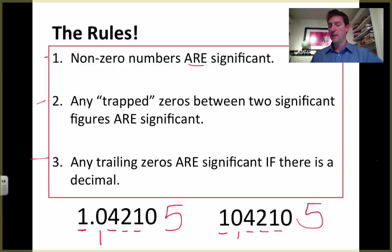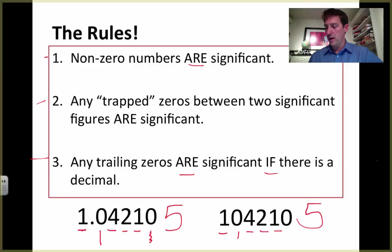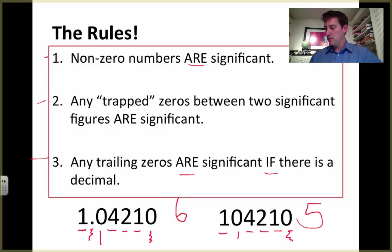The last rule: any trailing zeros — zeros at the end of the number — are significant if and only if there is a decimal somewhere in the number. We've got a trailing zero right here, and we've got a decimal in this number. So this isn't five significant figures — this is six. Over here, this is a trailing zero, but there's no decimal in the number. So this remains five significant figures, and this one remains six significant figures.